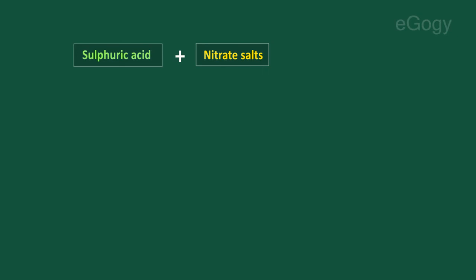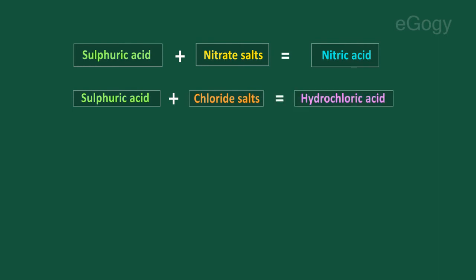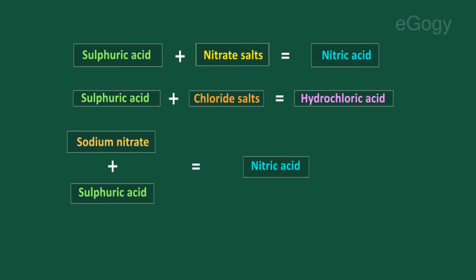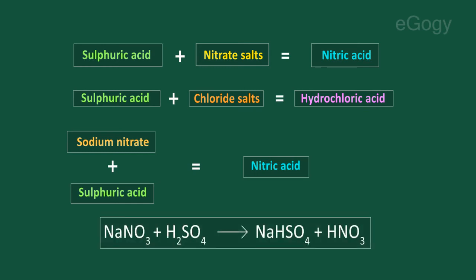Sulfuric acid forms nitric acid on reaction with nitrate salts and it forms hydrochloric acid on reaction with chloride salts. For example, sodium nitrate reacts with sulfuric acid to form nitric acid. NaNO3 on reaction with H2SO4 gives NaHSO4 and HNO3.